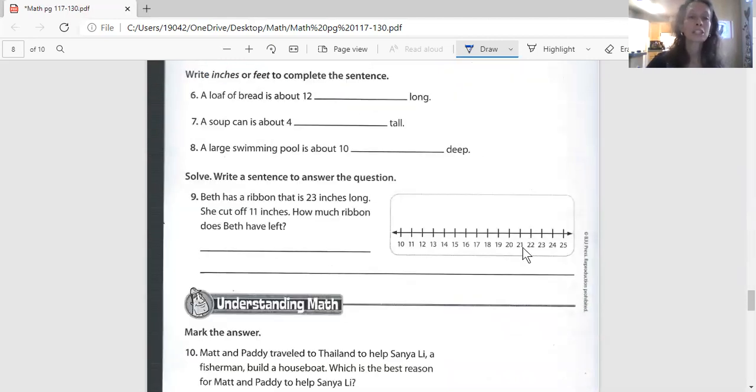And the next section asks us, let's read the directions together. Write inches or feet to complete the sentence. Our choices are inches or feet. A loaf of bread is about 12 blank long. If you think a loaf of bread is 12 inches long, write inches in here. If you think a loaf of bread is 12 feet long, write feet here.